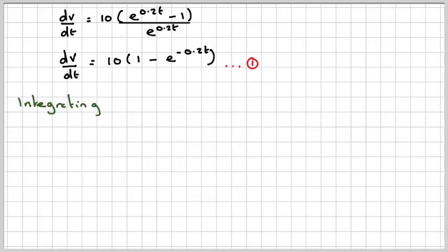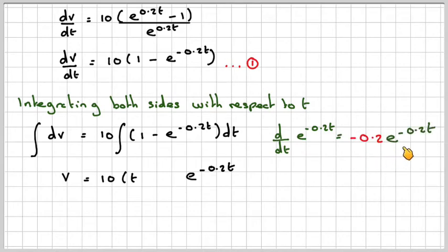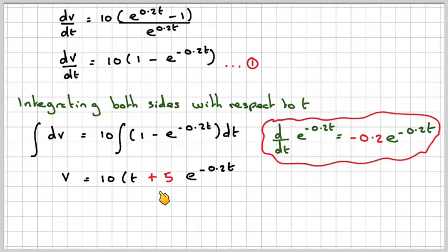Integrating both sides with respect to t, we're going to get the integral of dv is equal to, I take the 10 out of the integral, and the integral of 1 minus e to the minus 0.2t dt. That will give me v if I integrate this side and we're going to get 10. The integral of 1 is t. Now the integral of this is itself. However, if we differentiate this, we'll get an extra minus 0.2e to the minus 0.2t. Now minus 0.2 is minus 1 fifth. So that means I need to put here a 5 in front and change the sign for a plus because I've got a minus here. And then we get a constant.